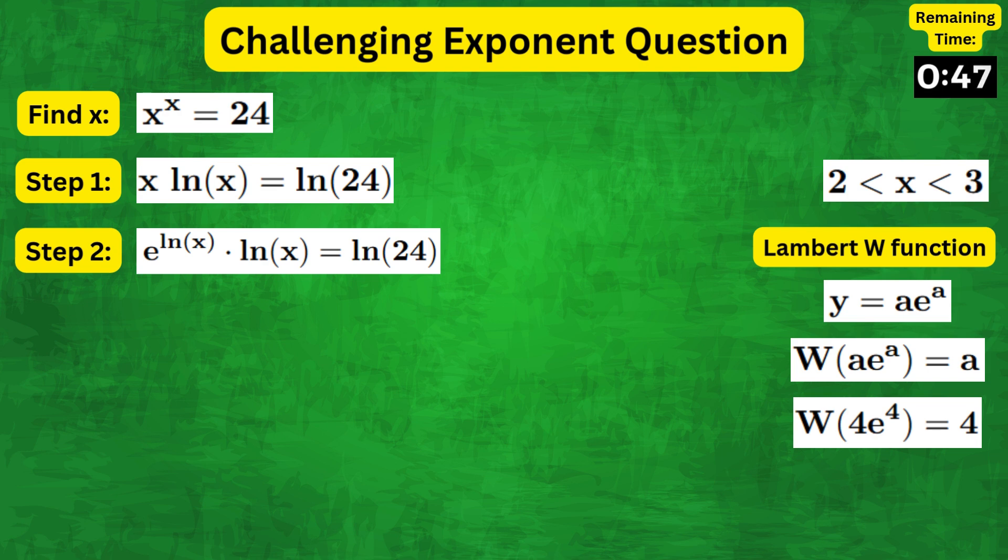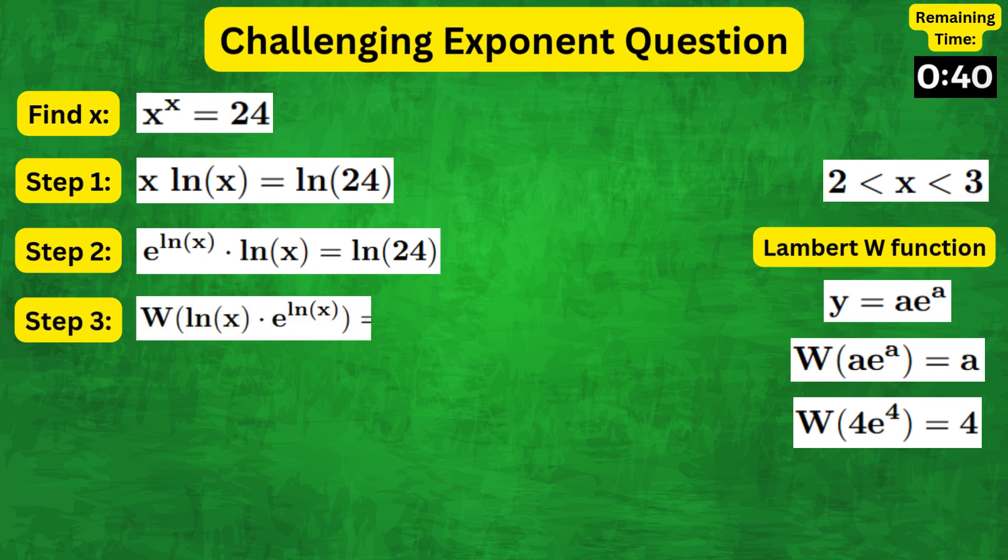Now that we have the form ae to the a, we can apply the Lambert W function on both sides to get W of natural log of x times e to the natural log of x equals W of natural log of 24.